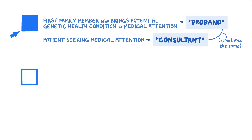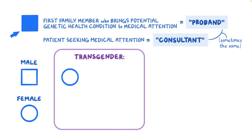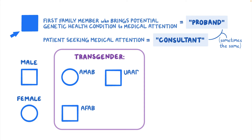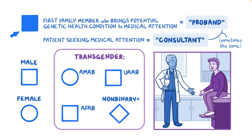A square on the chart indicates a person who identifies as male. A circle indicates a person who identifies as female. For people who are transgender, use the notation AMAB (assigned male at birth), AFAB (assigned female at birth), or UAAB (unassigned at birth) next to their symbol. A diamond can be used for people who identify as non-binary and for other instances of gender diversity. Since both sex assigned at birth and gender identity are clinically relevant when assessing and discussing genetic risks, a safe and affirming environment helps to encourage the disclosure of this information.